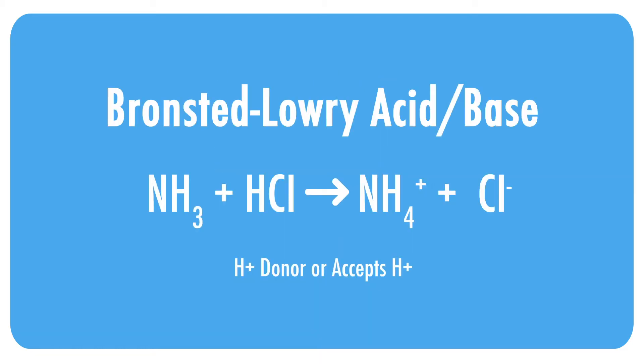The second type of acid is the Bronsted-Lowry acid and base. A Bronsted-Lowry acid acts as an H plus donor and a Bronsted-Lowry base acts as an H plus acceptor. A great example of this is ammonia reacting with hydrochloric acid. The ammonia is acting as a Bronsted-Lowry base because it is stealing an H plus from hydrochloric acid. And the hydrochloric acid is acting as a Bronsted-Lowry acid because it is donating a proton to the Bronsted-Lowry base, ammonia.